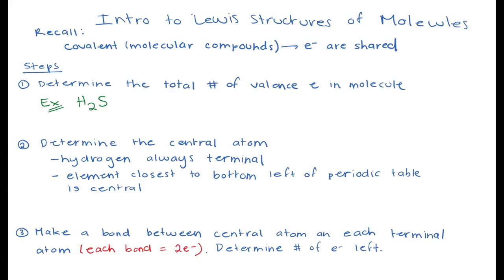We've looked at Lewis structures for just a single atom to examine valence electrons. Now we're going to look at the overall molecule. If we have two non-metals, they can share electrons and form chemical bonds. Remember that covalent and molecular compounds can be used interchangeably, but the key is that the electrons are shared.